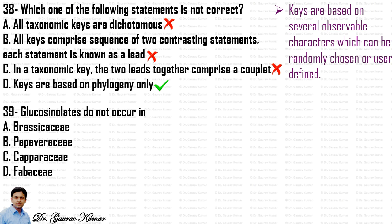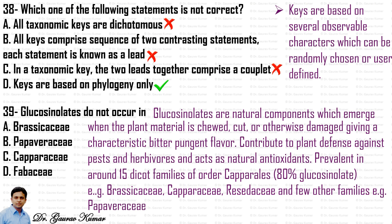Next question: glucosinolates do not occur in which family — Brassicaceae, Papaveraceae, Capparaceae, or Fabaceae? Glucosinolates are natural components that produce a bitter, pungent flavor when plant material is damaged. They contribute to plant defense and act as natural antioxidants. About 80% of all glucosinolates occur in the order Capparales, including Brassicaceae and Capparaceae. Papaveraceae also contains glucosinolates. The correct answer is Fabaceae — glucosinolates do not occur in Fabaceae.